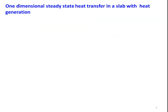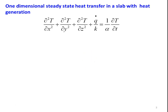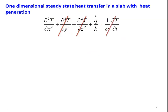For one-dimensional steady state heat transfer in a slab with heat generation, this is the general heat conduction equation for a slab in Cartesian coordinate system for a three-dimensional slab. We simplify this equation for the present situation. Since it is one-dimensional, we drop the temperature gradient terms in the other two directions, y direction and z direction. For steady state heat transfer, we drop the temperature variation with respect to time.